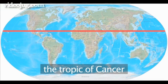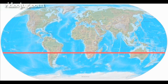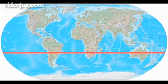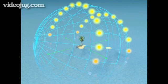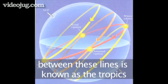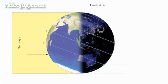At 23.5 degrees north, we have a line called the Tropic of Cancer, and at 23.5 degrees south, we have another one, the Tropic of Capricorn. It is at these points that the sun will be directly overhead on the solstice. The part between these two lines is known as the tropics, as the sun is always high in the sky and so they do not have noticeable seasonal differences.